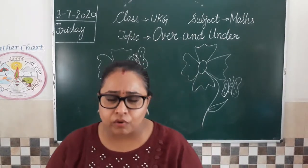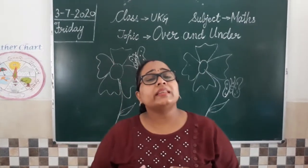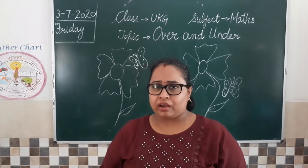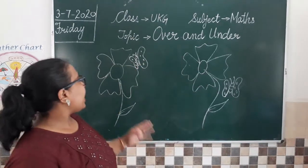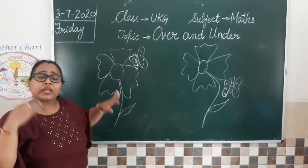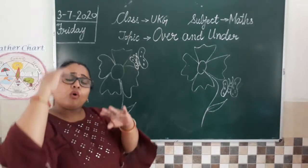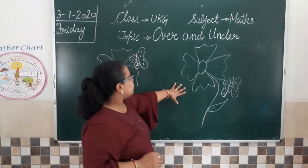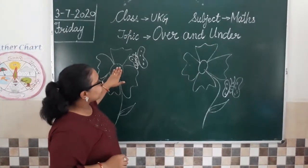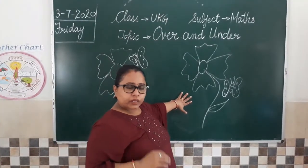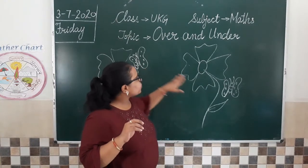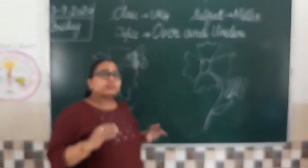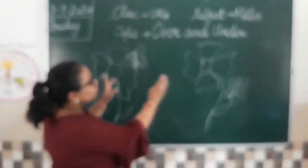Butterflies are always around flowers because they get their nectar — they get their food from flowers, they suck the juices of flowers. So today I have drawn an example to make you understand the meaning of over and under. Just observe the two pictures here. I have drawn one flower here and one flower here, and there is a butterfly in each picture. Now tell me, what is the difference between the two pictures?